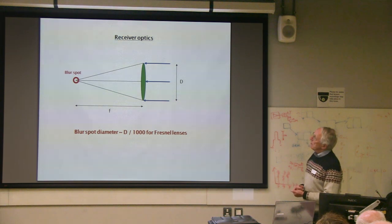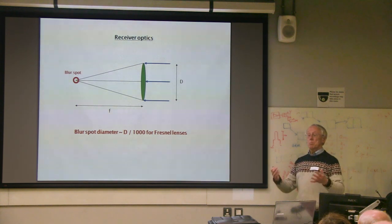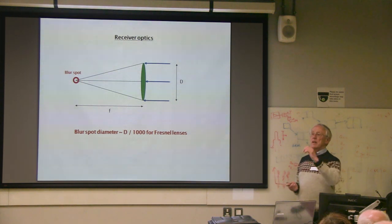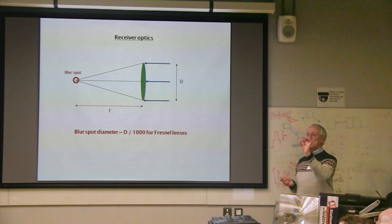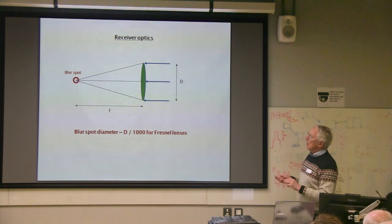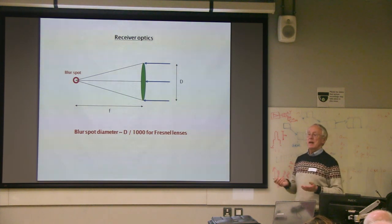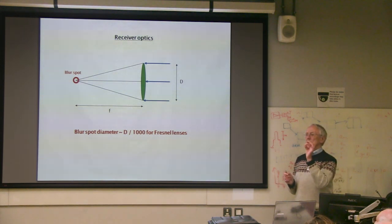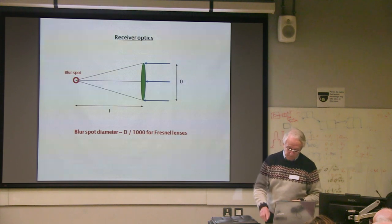Looking crudely at receiver optics: we have a lens as big as possible to pull in as much light as possible, bringing it to roughly a focal point where the photodiode sits. With this type of Fresnel lens we can never produce a very sharp spot image because of imperfections, and you end up with what's called a blur spot diameter — typically D over 1000 for Fresnel lenses — so perhaps 2–3mm at best, sometimes worse depending on lens quality. That's all we need.